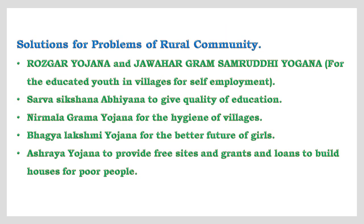The government has introduced many rural development programs as solutions. First is Sampoorna Grameen Rozgar Yojana and Jawahar Grama Samruddi Yojana for educated youth in villages for self-employment. Second is Sarva Shiksha Abhiyana to provide quality education. Third is Nirmala Grama Yojana for hygiene of villages. Fourth is Bhagya Lakshmi Yojana for the better future of girls. Fifth is Ashraya Yojana to provide free sites and grants and loans to build houses for poor people.